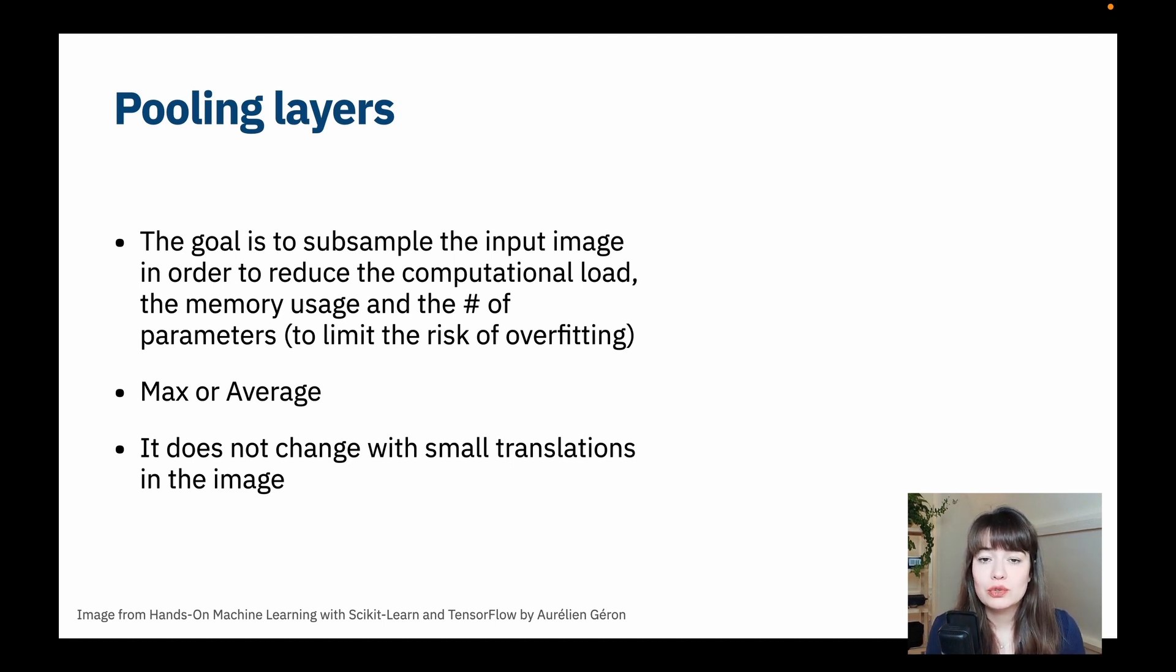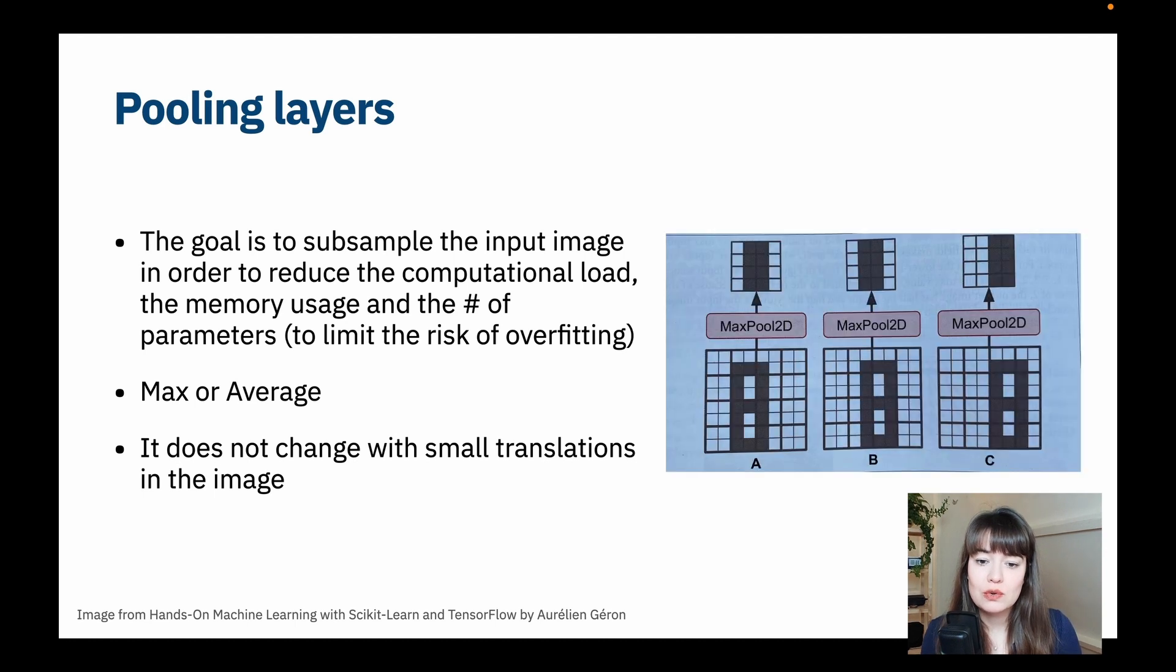So let me show you an example from this really good book that I would recommend you also to go check out called hands-on machine learning with scikit-learn and tensorflow. And here you can see if these are the original images, even if you change this structure that's in the middle of the image a little bit, if you shift it a little bit to the side, the pooling layers output is not going to change. And this is important to know.